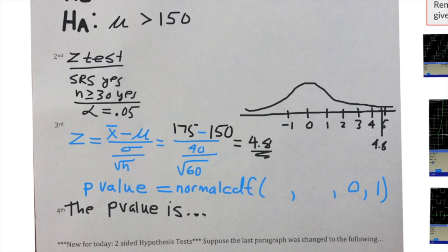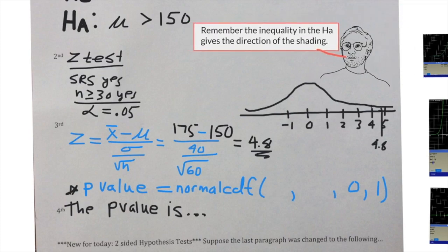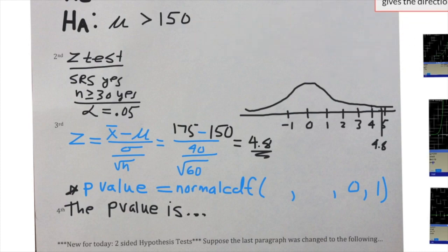When it comes to making a decision about shading and finding the p-value or finding out how rare our curve is, there's a tip here: a little graphic for remembering. Remember always that the inequality in the HA will give you the direction in terms of the shading. So this is a greater than—let's put this reminder off to the side. Since it's greater than, we're going to shade to the right.